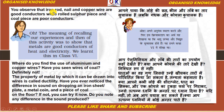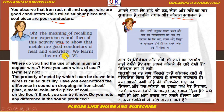You observe that iron rod, nail and copper wire are good conductors, while sulfur pieces and coal pieces are poor conductors. Yaani hum keh sakti hain ki lohe ki chhad, keel, taambe ki taar — sab kya hain? Su chalak hain. Yaani in ke andar se jo electricity hai, jo vidyut dhara hai, woh paas ho sakti hai. Lekin jo sulfur hai yaani gandak, aur koila, woh ku chalak hain. The meaning of this activity was to show that metals are good conductors of heat and electricity. We learned this in Class 6th.